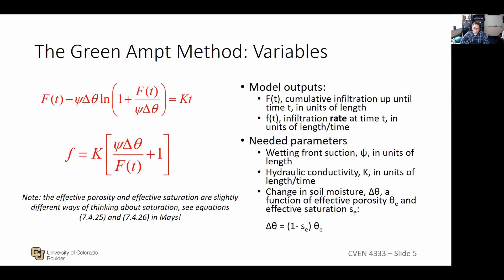You've got the wetting front suction, which has to do with the porosity of the soil and the pores trying to pull the water up. The hydraulic conductivity is in units of length per time. Then the change in soil moisture delta theta is a function of the effective porosity and effective saturation. The effective saturation touches on antecedent moisture conditions — the more saturated the soil is initially, the less the change between initial and saturated moisture content. These are just constants that don't change throughout the calculation.